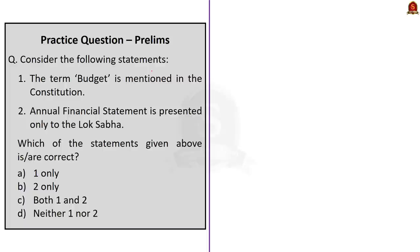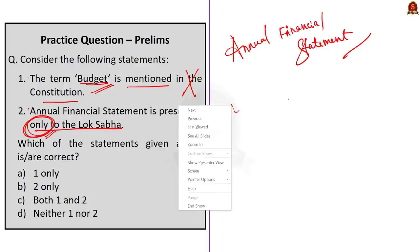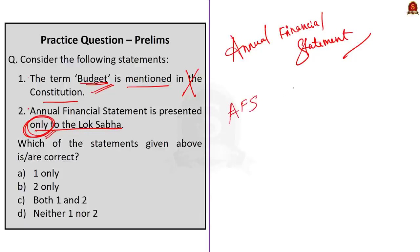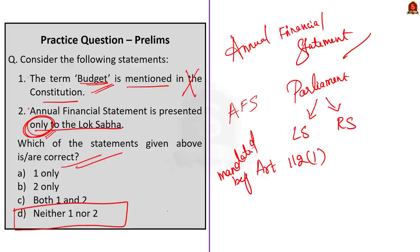Now moving on to the next question. This is regarding our last article discussion on the budget — also a two-statement question. First statement says the term 'budget' is mentioned in the constitution. Statement one is absolutely incorrect because the term budget is not mentioned in the constitution; instead we can find the term Annual Financial Statement. Now moving on to the second statement: the Annual Financial Statement is presented only to the Lok Sabha. Be careful whenever the word 'only' appears in a statement. It is also incorrect because the Annual Financial Statement is presented before the Parliament — that is, before Lok Sabha as well as Rajya Sabha — as mandated by Article 112 Clause 1. The question demands the correct statement, so the answer here will be option D — neither one nor two, because both statements are incorrect.